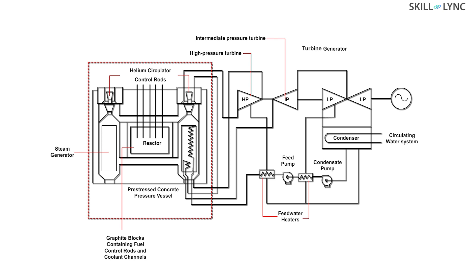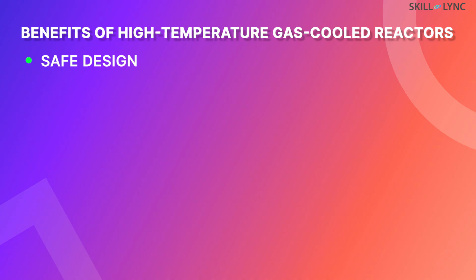The core, helium circulators, and the steam generators are placed in a pre-stressed concrete pressure vessel, and the control of the reaction is achieved by using boron carbide control rods. The rods can enter into the core from the top through channels in the graphite block. Well, that is about the working of high temperature gas cooled reactors.